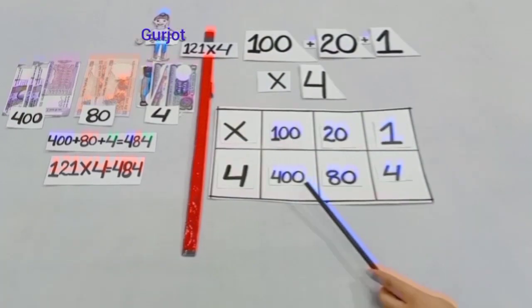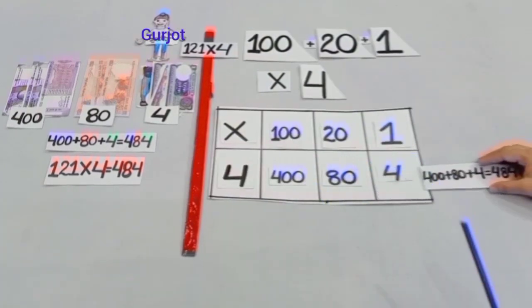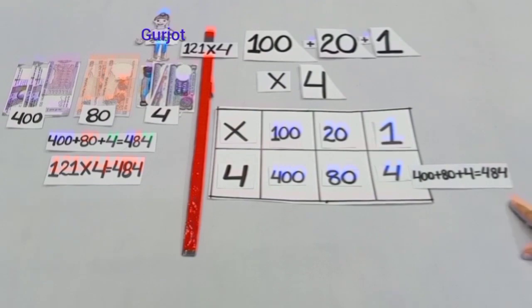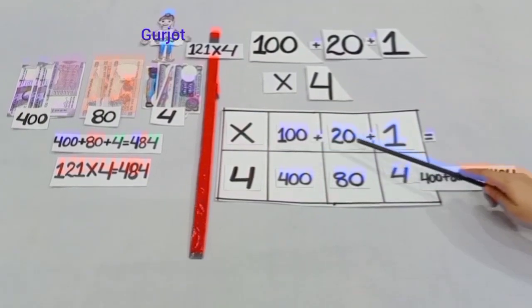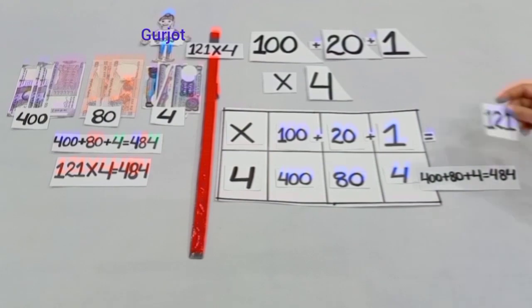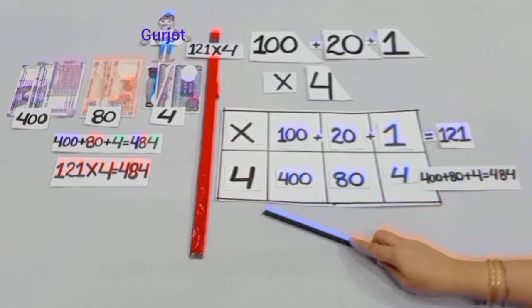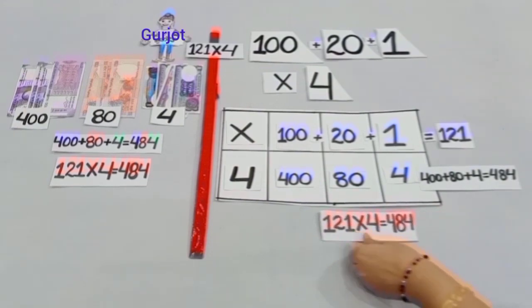So after adding all these 400 plus 80 plus 4, we get 484. And here, we have 121 and when we will multiply it by 4, we will get the answer for our question. That is, 121 multiplied by 4 is equal to 484.